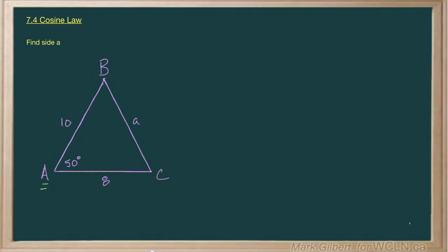I have angle A. I have the two sides that make up angle A. So I have side, angle, side. That means cosine law.